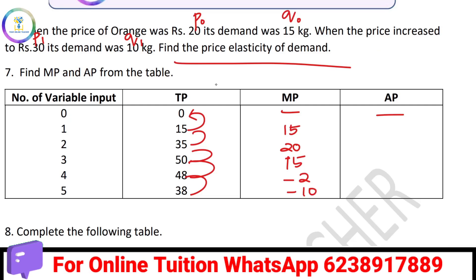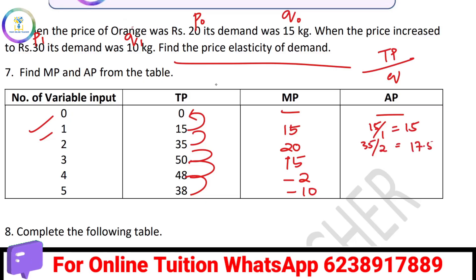The equation for average product (AP) is TP divided by variable input Q. So: 15 divided by 1 equals 15. Then 35 divided by 2 equals 17.5. Then 50 divided by 3 equals 16.6. Then 48 divided by 4 equals 12. Then 38 divided by 5 equals 7.6. So here we calculate AP.